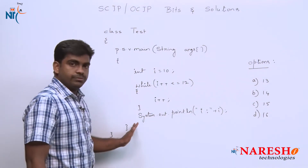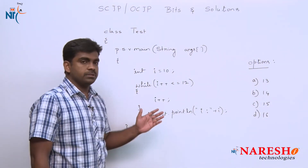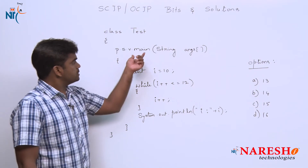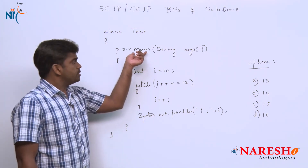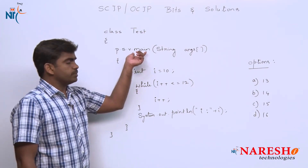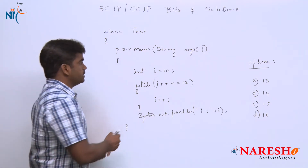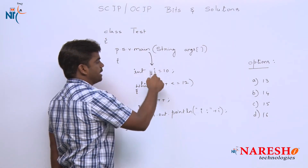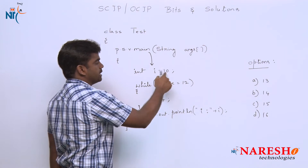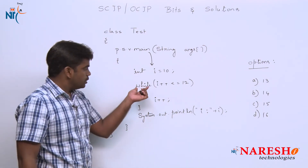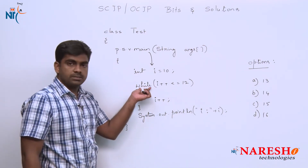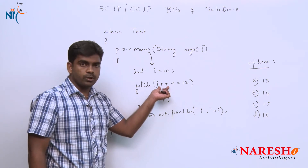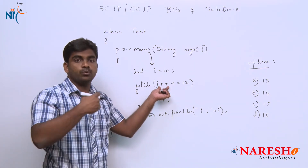First you try yourself and then compare with the solution. Execution starts from the main method. Once the control moves inside, I is initialized with 10 and loop execution starts. Here we are using the modify operator — it is a post increment.